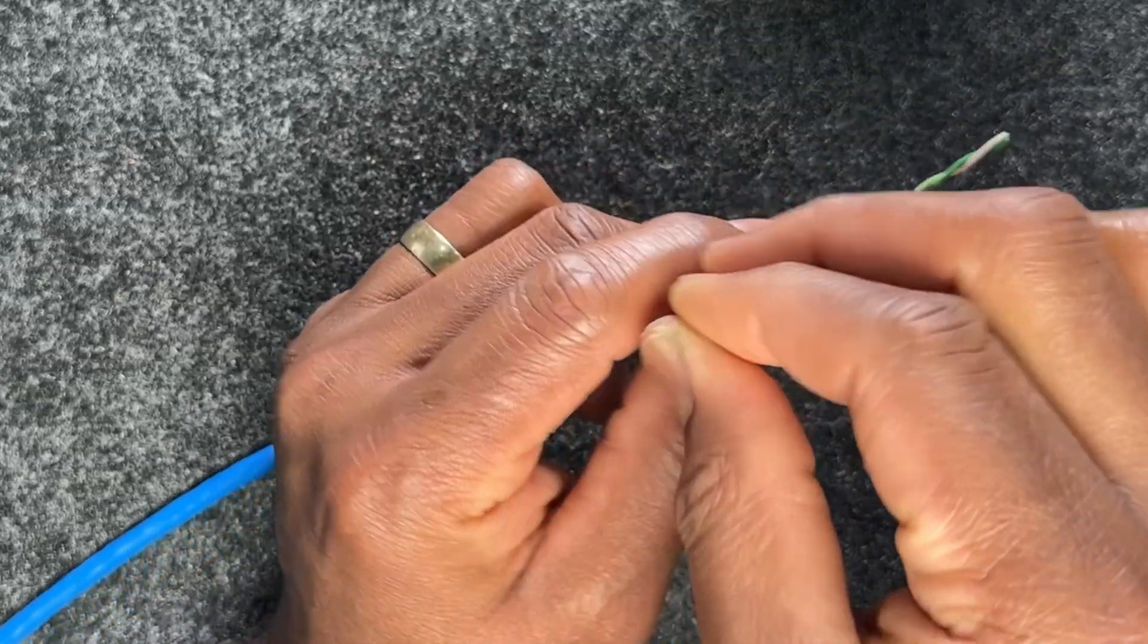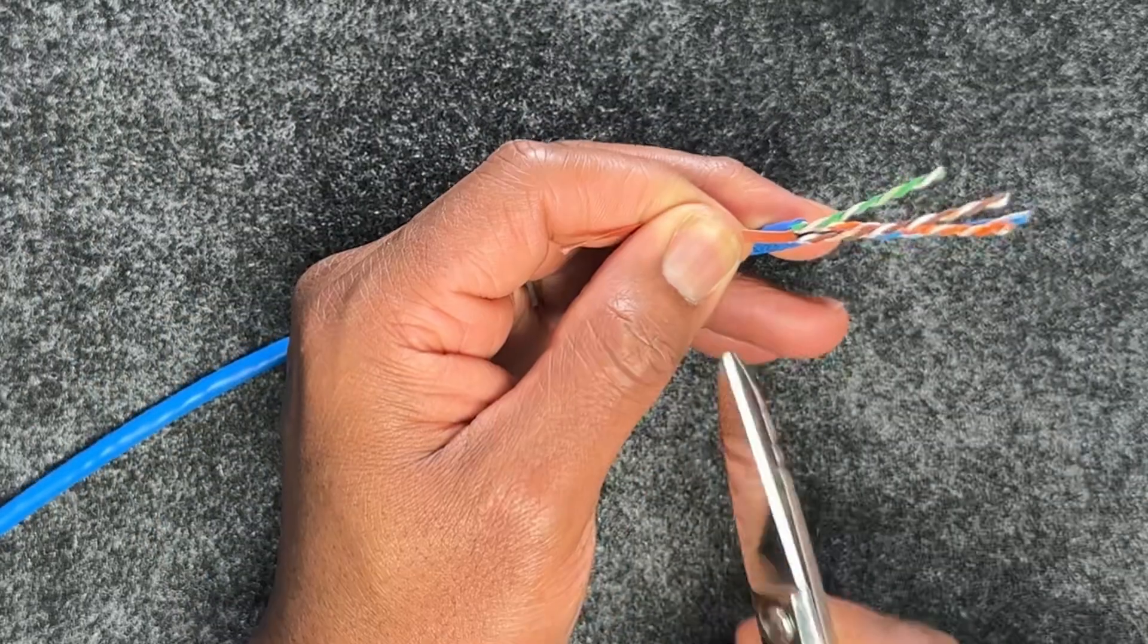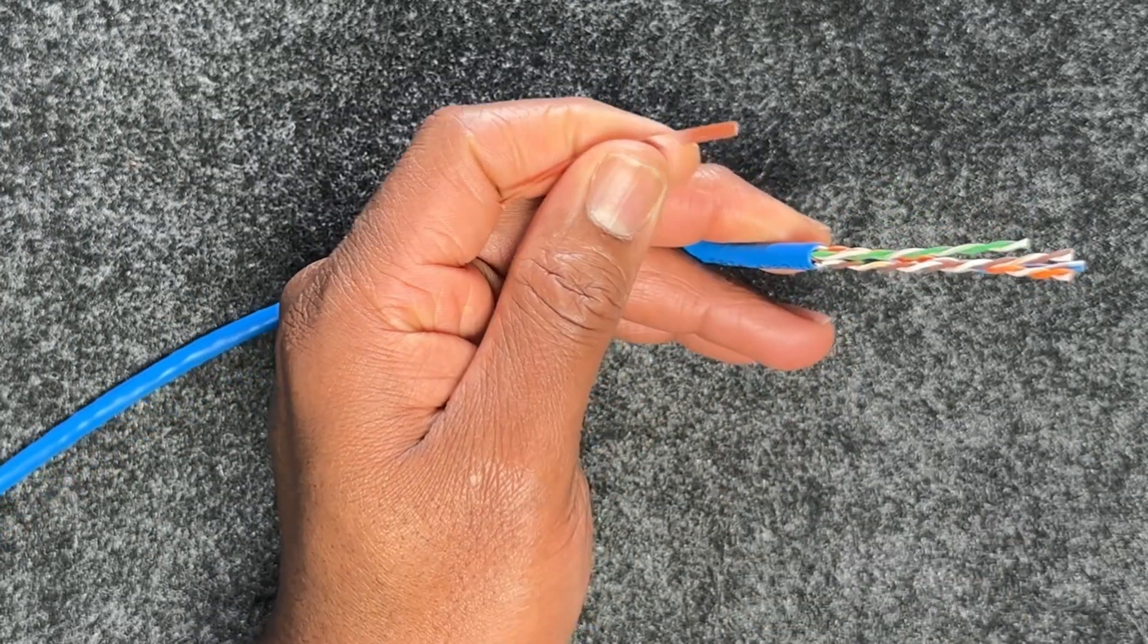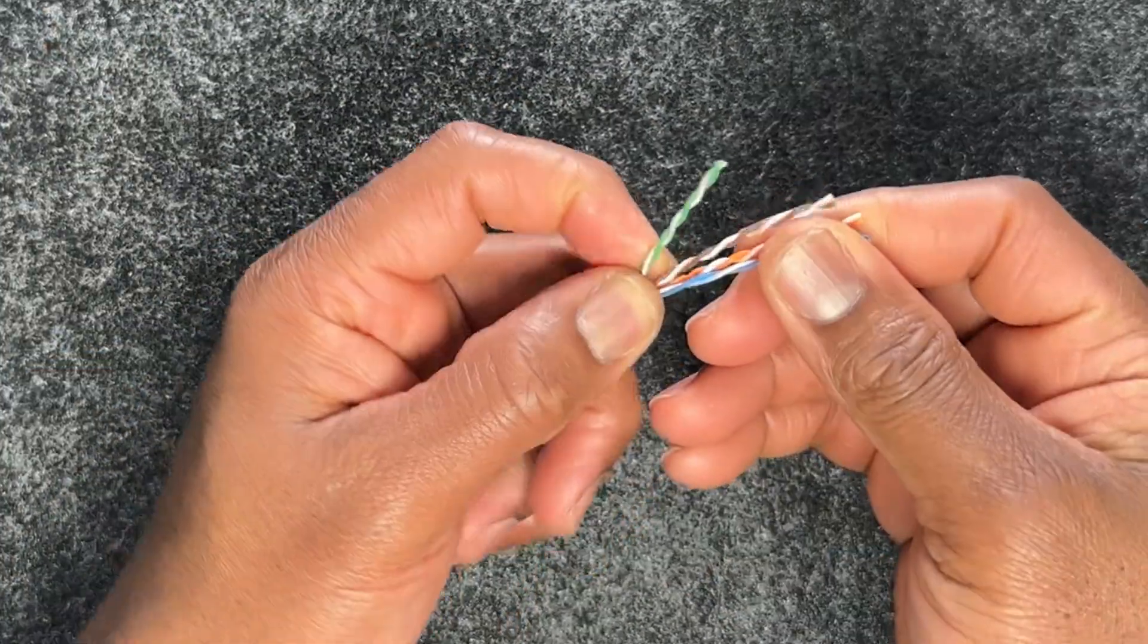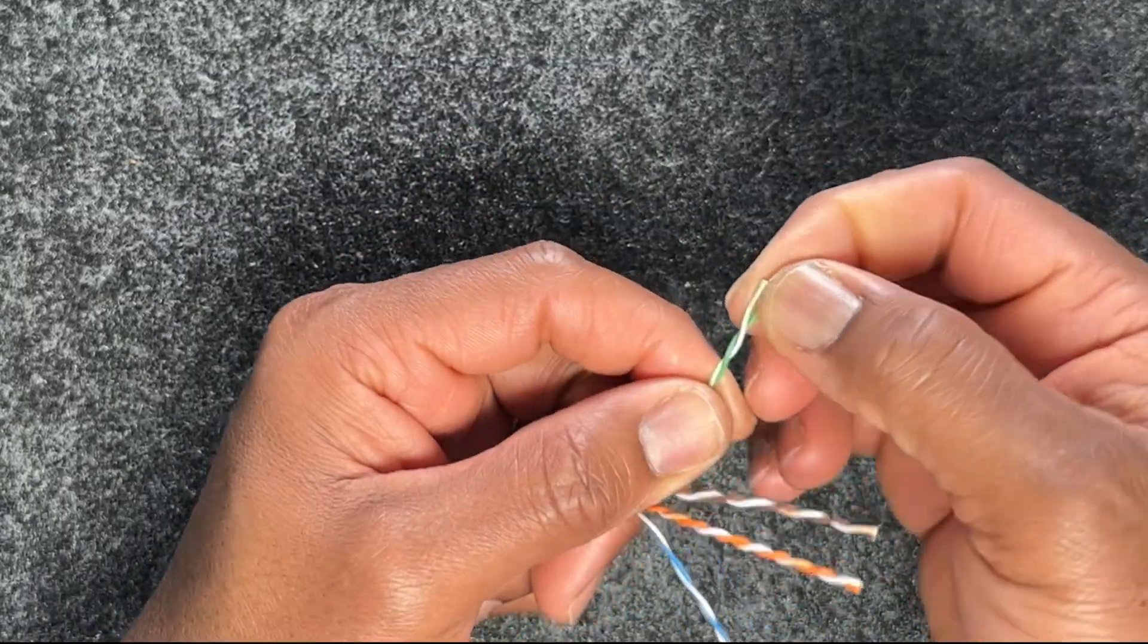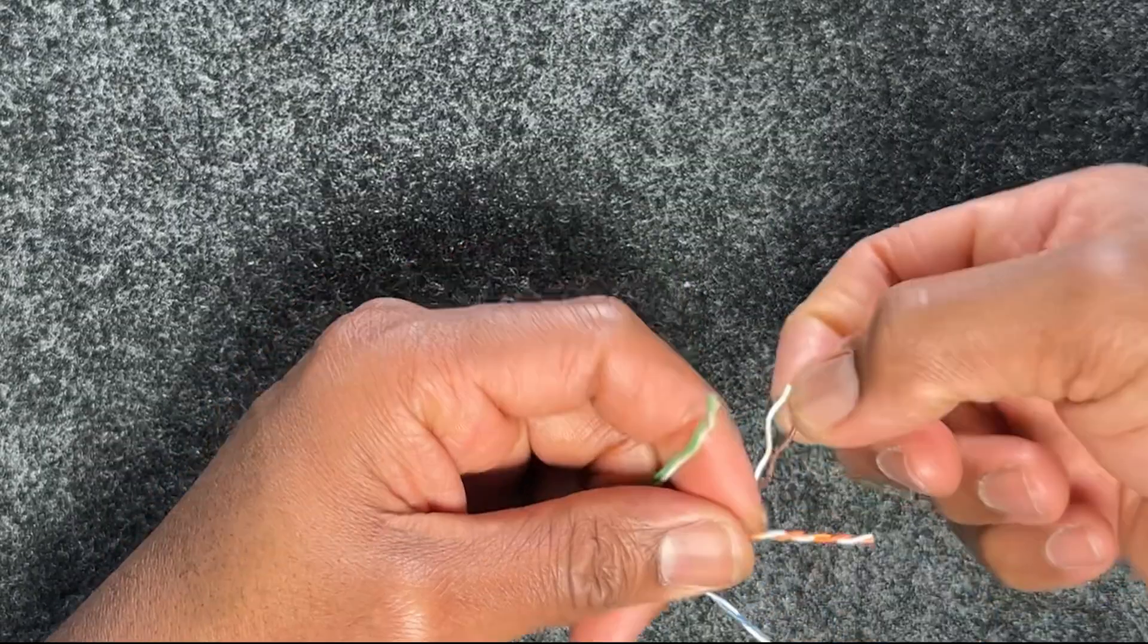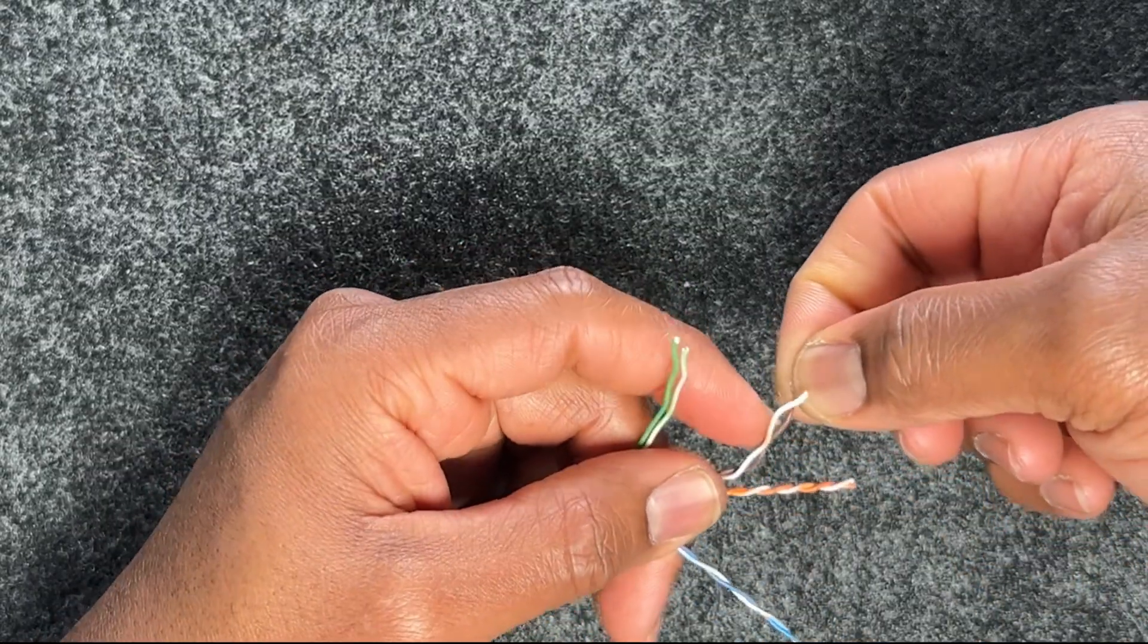I'm confident that I did not rip through the jacket of the individual pairs because my blade did not go all the way through. I had to bend it to have it open. However, I'll still inspect all the edges to make sure the blade didn't go too deep. This category six cable has the center divider, so I'll snip that off.